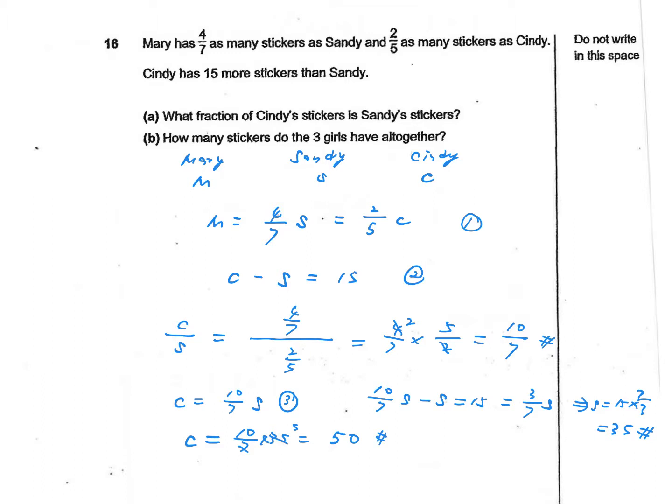Finally, we should be able to figure out M, Mary's stickers. M equals 2/5 multiplied by C. C is 50 in this case, so the 5 cancels out. We have 10 times 2, that's going to be 20.